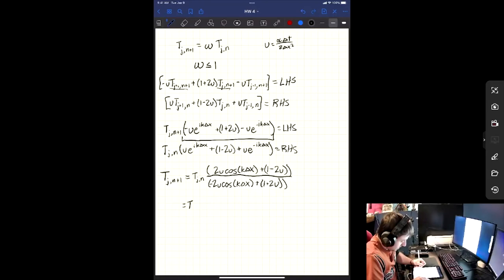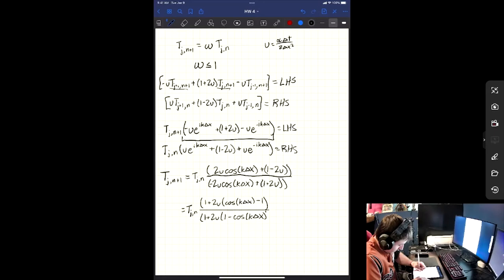And then this whole thing is divided by a 2u cosine of k delta x plus 1 minus 2u. So, and then we can factor out a 1 plus 2u on the numerator and denominator. So what do we get here, we get a 1 plus 2u times cosine of k delta x minus 1. And then we get a 1 plus 2u here. And then on this time we get 1 minus cosine of k delta x.